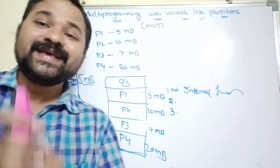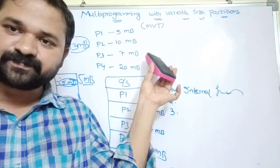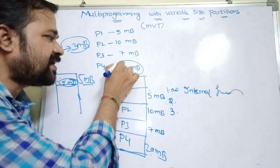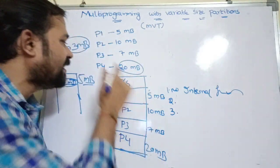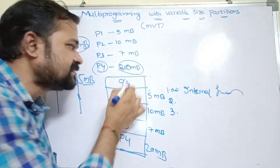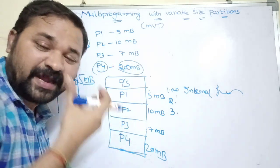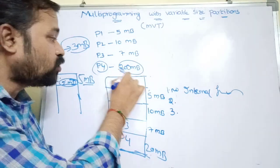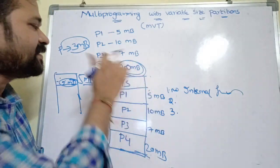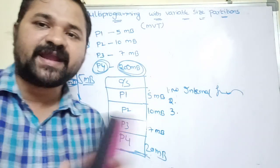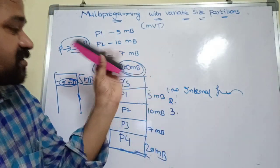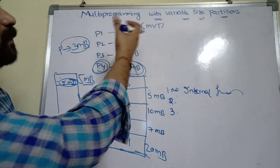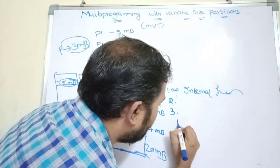The third advantage is there is no limitation on the size of a process. If the size of your process is 20 MB, then 20 MB of memory will be allocated for it. These are the three advantages of multiprogramming with variable size partitions.